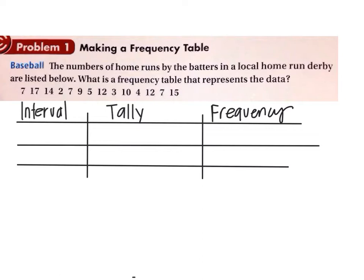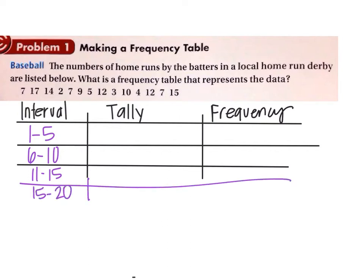So for this data set, our intervals, I'm going to make them from 1 to 5, and then 6 to 10, and then 11 to 15, and then 16 to 20. I like intervals of 5, and all data sets don't go well with intervals of 5, but this one will, so I'm going to use intervals of 5.